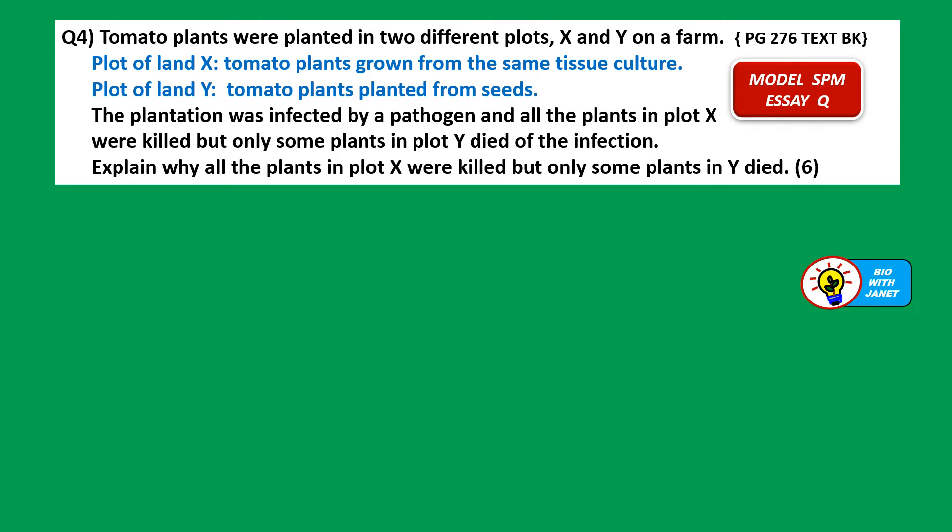Here is the final question, similar to an SPM past year question and also found in the textbook. Tomato plants were planted in two different plots of land, X and Y, on a farm. For plot X, tomato plants were grown from the same tissue culture. For plot Y, the tomato plants were planted from seeds. The plantation was infected by a pathogen and all the plants in plot X were killed, but only some plants in plot Y died. Explain why.